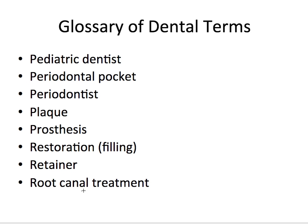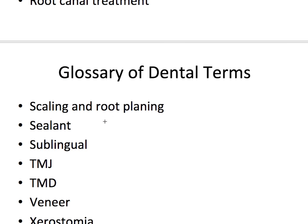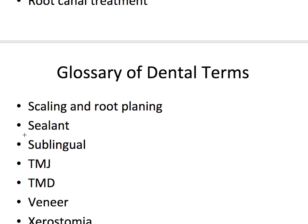A crown is usually recommended, especially for posterior teeth, to cover the tooth and prevent it from breaking after root canal treatment. Scaling and root planing refers to a procedure that uses tools to remove plaque, tartar, and stains from teeth. A sealant is a thin plastic resin coating placed on the biting surfaces of back teeth to help prevent cavities. Sublingual refers to under the tongue — from 'sub' and 'lingual.' TMJ is short for the temporomandibular joint — the joint that connects the lower jaw to the skull. This is not to be confused with TMD, which refers to temporomandibular joint dysfunction — pain, clicking, and other symptoms caused by problems with the TMJ and associated muscles.